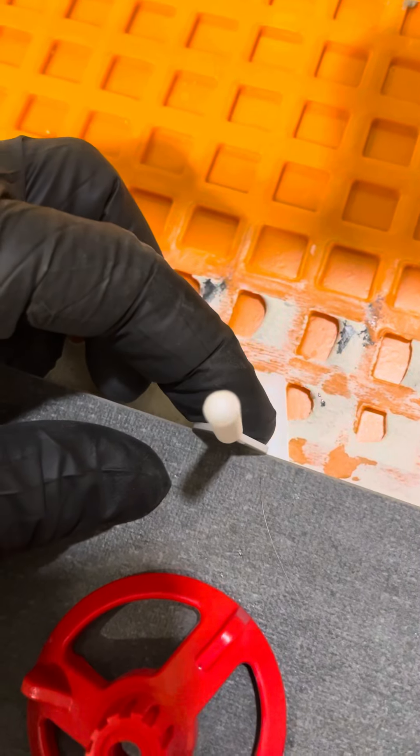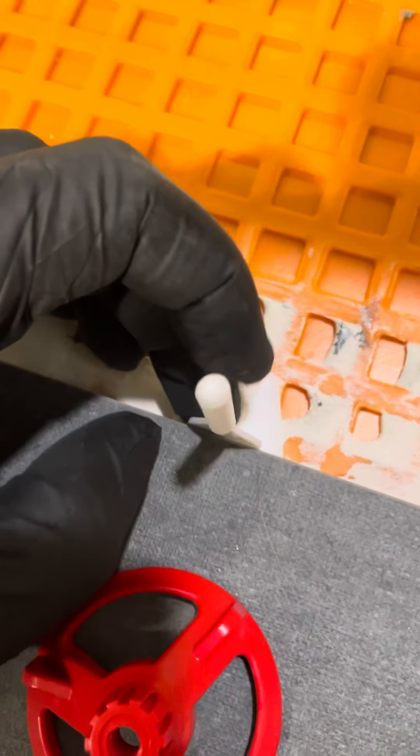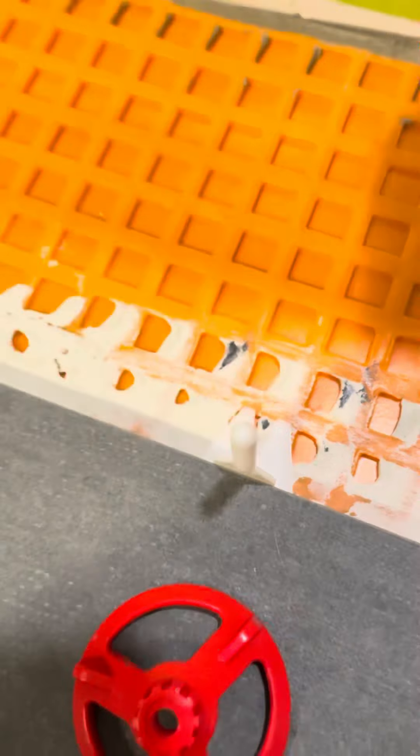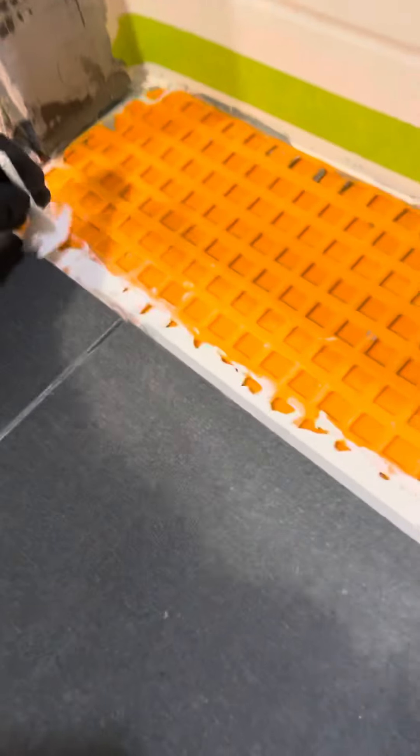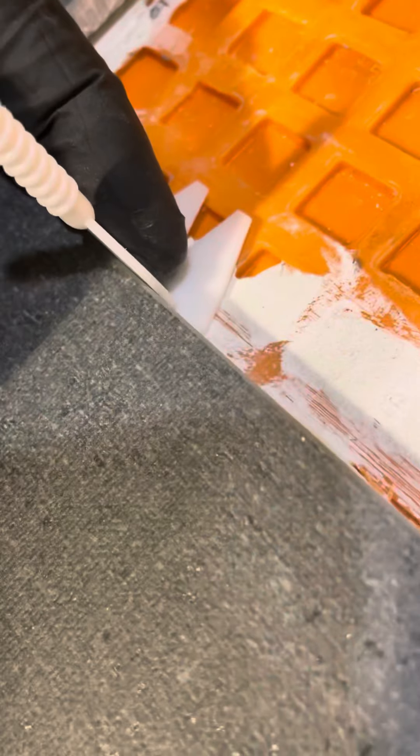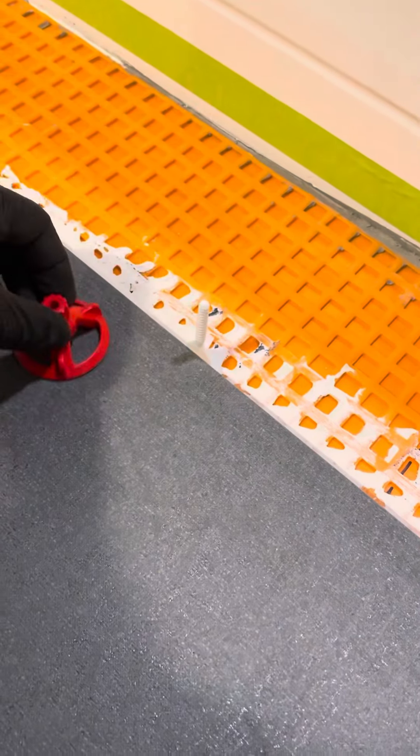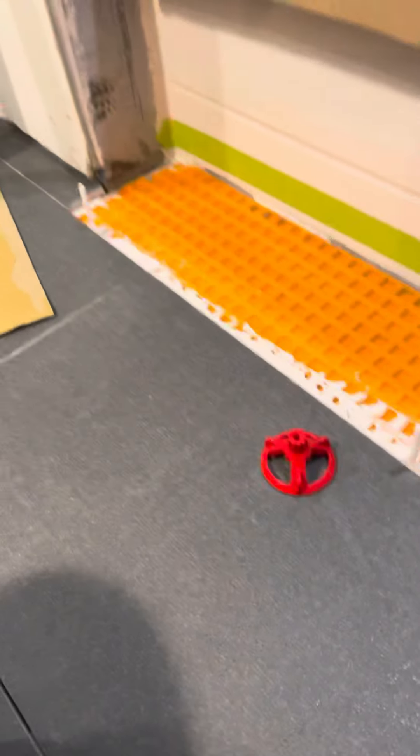So when you put the new mortar in, put some mortar on the tab itself, slide it in there, and then same goes for over here at this seam. Nice and tight. Place the last piece of tile in, spin down, perfectly level. No movement.